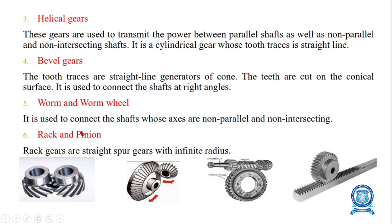The last type is rack and pinion. Rack gears are straight spur gears with infinite radius. The rack is a toothed bar that can be thought of as a sector gear with an infinitely large radius of curvature. Torque can be converted into linear force by meshing the rack with the pinion; when the pinion turns, the rack moves in a straight line.